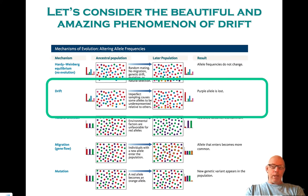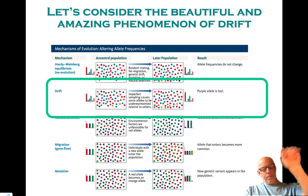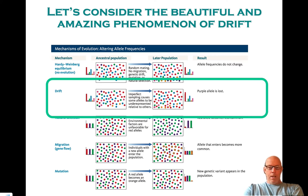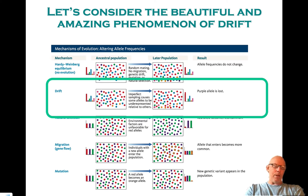Or mutation, which might tend to cause big A to become little a more frequently than little a becomes big A, or finite size effects, which is the thing we're going to think about now.